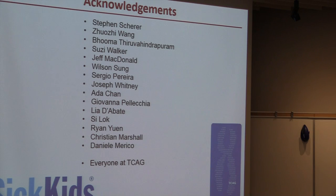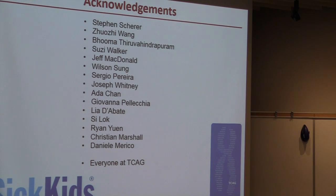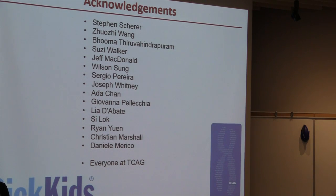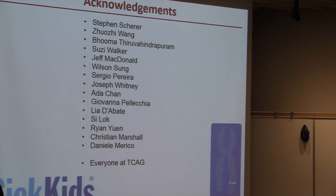Audience member: Are ERDS and CNVnator the best for both deletions and duplications? Speaker: ERDS was the best for deletions. For duplications, none of them were very good. Another tool, CNMOS, was actually the best for duplications, but only by a little. Overall we would say ERDS and CNVnator were the best. You could certainly use one tool for deletions and another for duplications — if you're especially interested in duplications, you could try CNMOS.